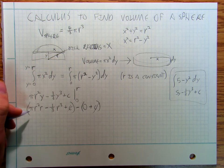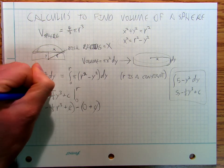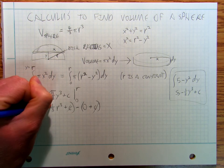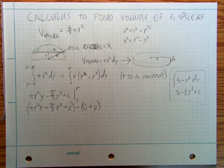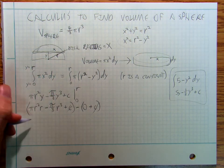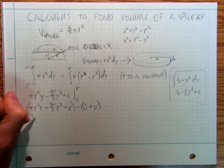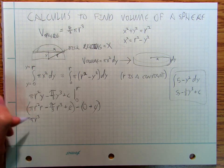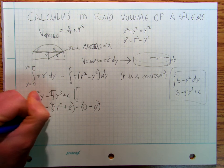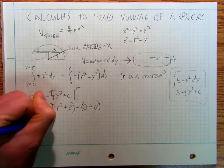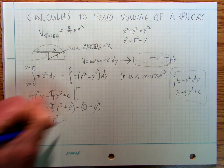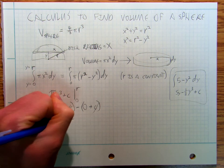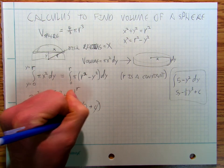So there's the quick and dirty way to distribute that pi. So I've got pi r cubed minus pi thirds r cubed, so that's going to be two thirds pi r cubed.